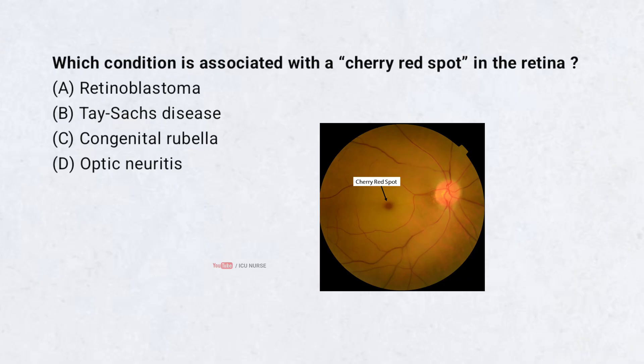Which condition is associated with a cherry red spot in the retina? A. Retinoblastoma. B. Tay-Sachs disease. C. Congenital rubella. D. Optic neuritis. Drop your answers in the comment section below.